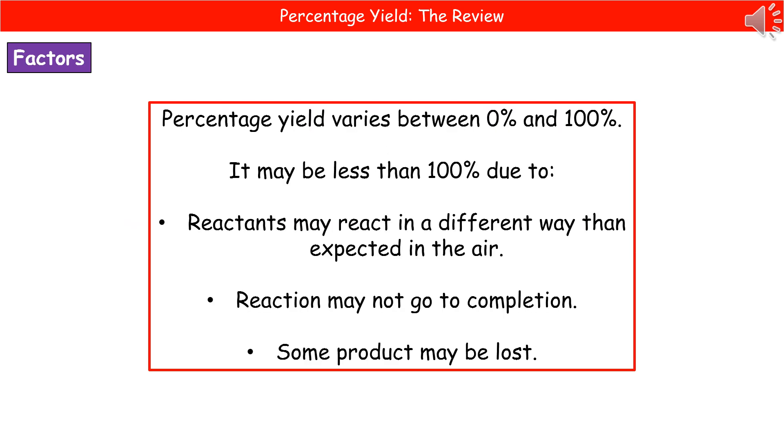Once you've done your calculation, there is one handy little check you can do to make sure you've got it right. Just have a look at your percentage and make sure it's somewhere between 0% and 100%. It can't be more than that. So if you've got an actual percentage yield you've calculated of 163%, for example, you've gone wrong. And the most likely thing you've done is you've put your numbers the wrong way around when you've divided. So just flip them the other way up, times that answer by 100, and that should sort your problem for you.